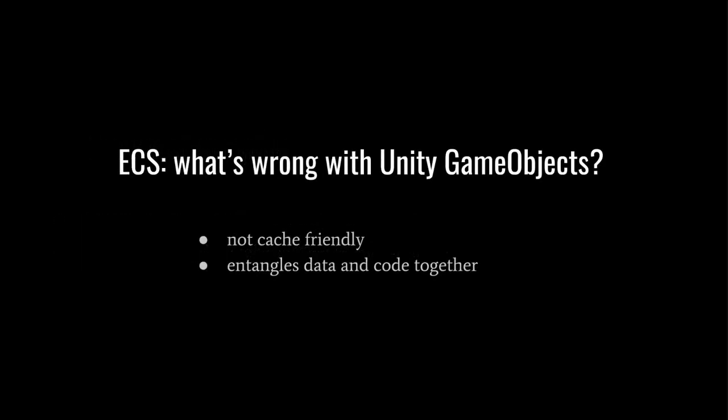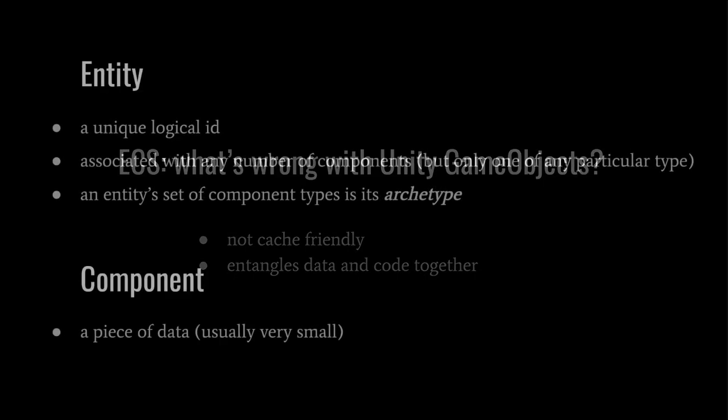While there are no plans to deprecate game objects, the game object pattern tends to structure data and code in a way that is very unfriendly to the CPU cache, incurring large performance hits. Moreover, it entangles data and code together, arguably making both less flexible and harder to reason about. In contrast, the entities and components of ECS lay out data in a sequentially contiguous, cache-friendly way, and the systems of ECS keep data and code logically separate. ECS may be used alongside Unity's game objects, or as a full replacement, though many Unity features currently have no ECS equivalents.